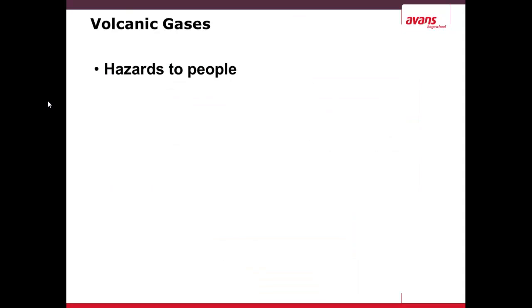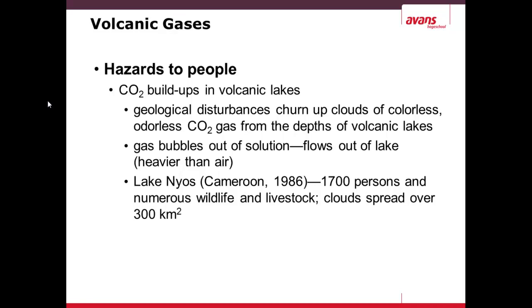Volcanic gases are very hazardous to people. The CO2 released can build up in low-lying areas — it is heavier than air, so it sinks to the ground. It only needs to be about a couple meters deep to kill anyone under two meters tall, as CO2 pushes out the oxygen. This can also build up slowly in lakes, such as Lake Nyos — a well-known event in Cameroon in 1986 where CO2 built up slowly in a lake. The lake released all the CO2 at once, and being heavier than air, it blanketed the surrounding land, killing numerous livestock and people within a 300 square kilometer radius.